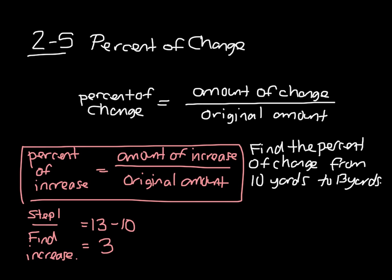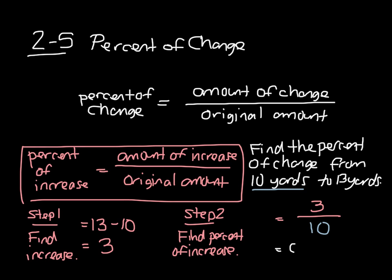Then step two, we're going to find percent of increase, and we're going to be doing that by taking our amount of increase and dividing it by the original amount. So our amount of increase was 3. Now our original amount was the 10 yards, and so we're going to put 3 over 10. We'll divide, and we'll get 0.30, which represents a 30 percent increase.